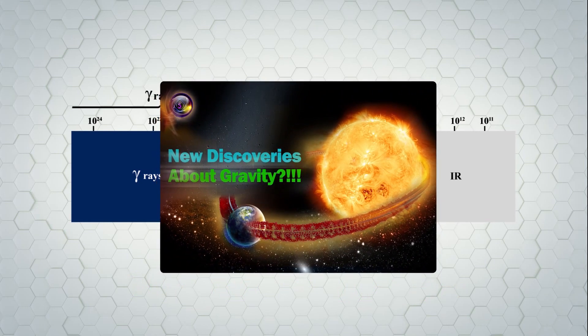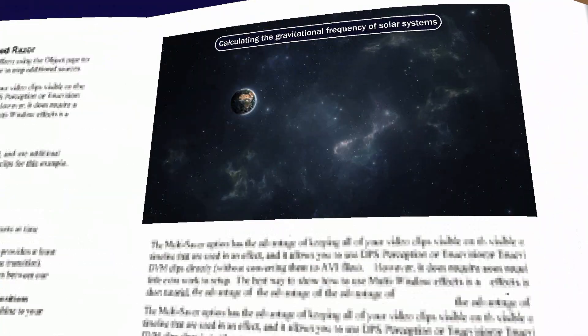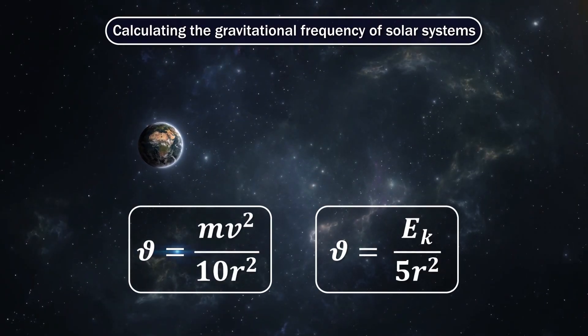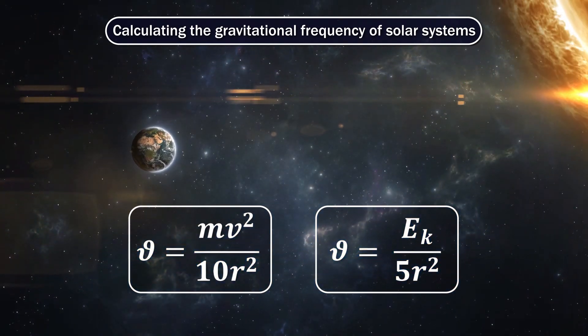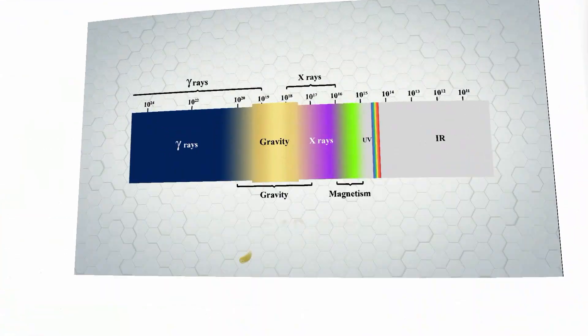Similarly, in another article entitled New Discoveries About Gravity, we dealt with the calculation of the frequency of gravitational waves whose frequency threshold was found to be 10 to the power of 18 Hz.